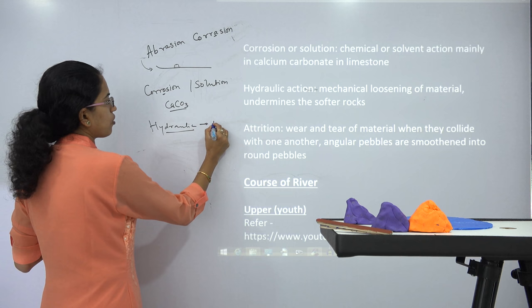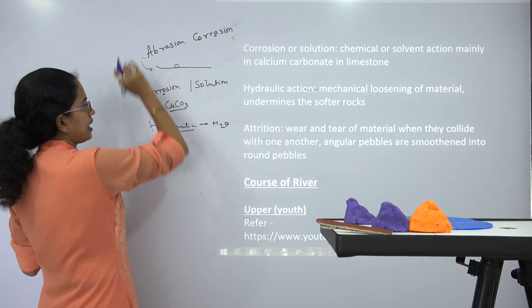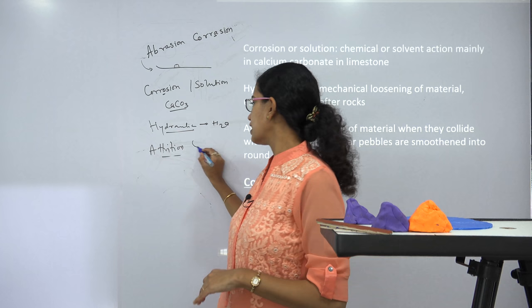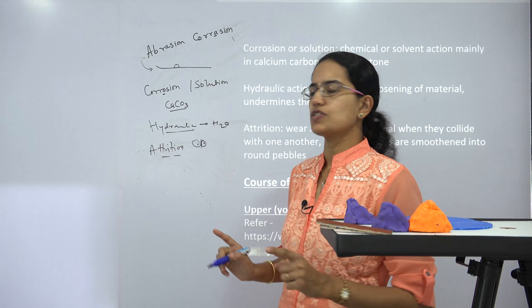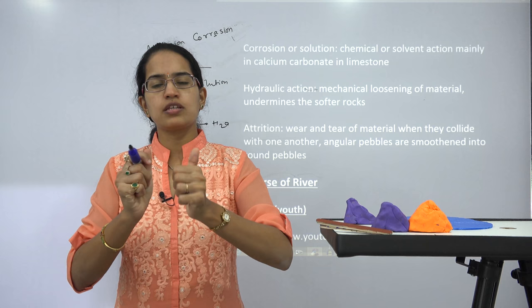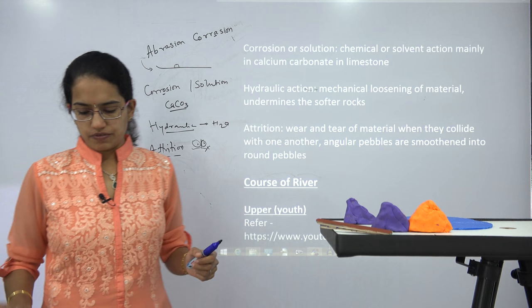The fourth concept is attrition. The difference between attrition and abrasion is: in abrasion, corrasion takes place between the surface and the particle; in attrition, it is the friction or wear and tear caused between two particles themselves — it has nothing to do with the surface. For example, two big boulders wear and tear together and break down into smaller particles — that is attrition.